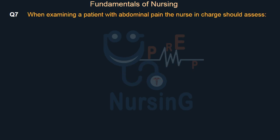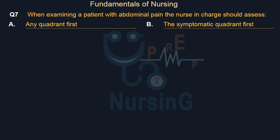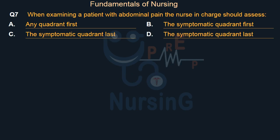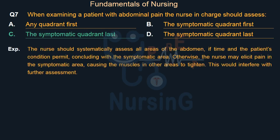When examining a patient with abdominal pain, the nurse should assess: Option A: Any quadrant first. Option B: The symptomatic quadrant first. Option C: The symptomatic quadrant last. Option D: The symptomatic quadrant last. The right answer is Option C: the symptomatic quadrant last. The nurse should systematically assess all areas of the abdomen, concluding with the symptomatic area; otherwise, eliciting pain there may cause muscles in other areas to tighten and interfere with further assessment.